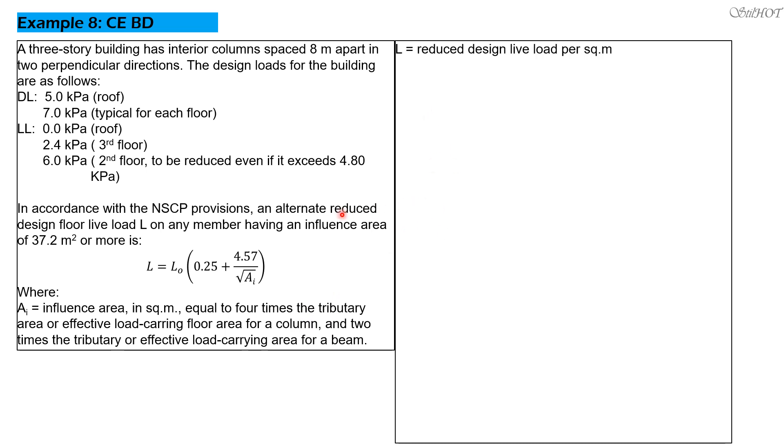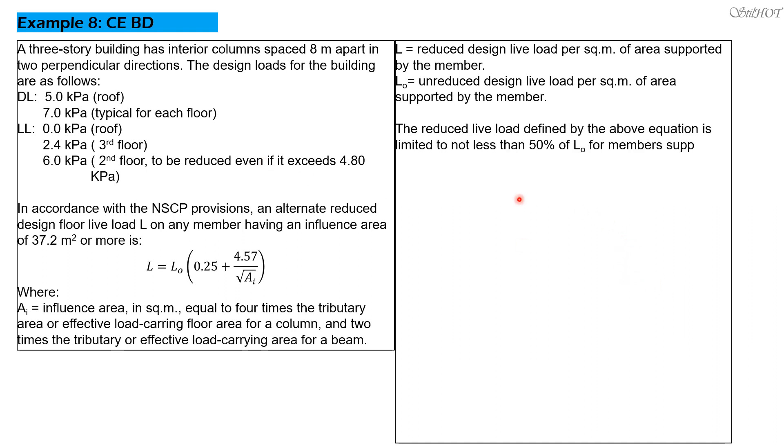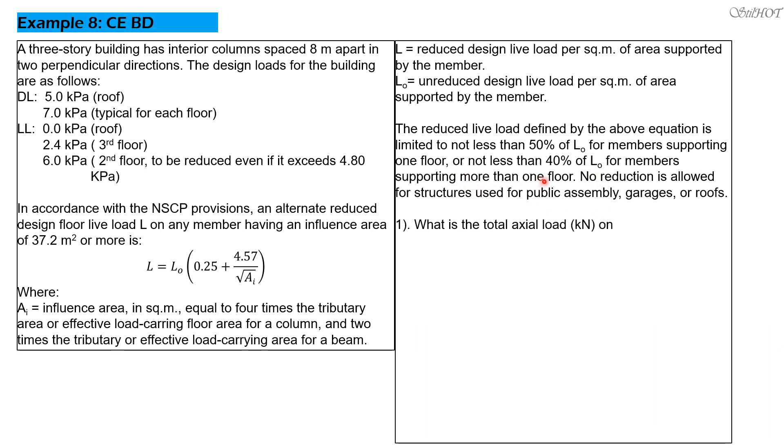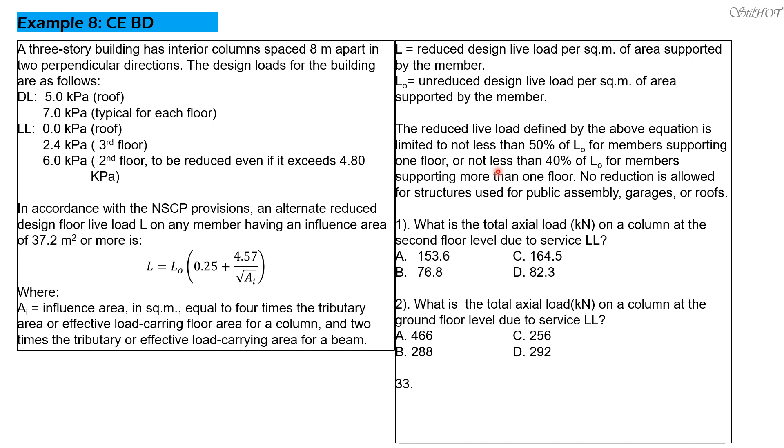L = reduced design live load per square meter of area supported by the member. The reduced live load defined by the above equations is limited to not less than 50% of L₀ for members supporting one floor, especially the column at the second floor. It supports only one floor which is the third floor, or not less than 40% of L₀ for the members supporting more than one floor. That's the column at the ground floor level. It supports more than one floor, so its reduced live load should not be less than 40% of the L₀ for that case. So no reduction is allowed.